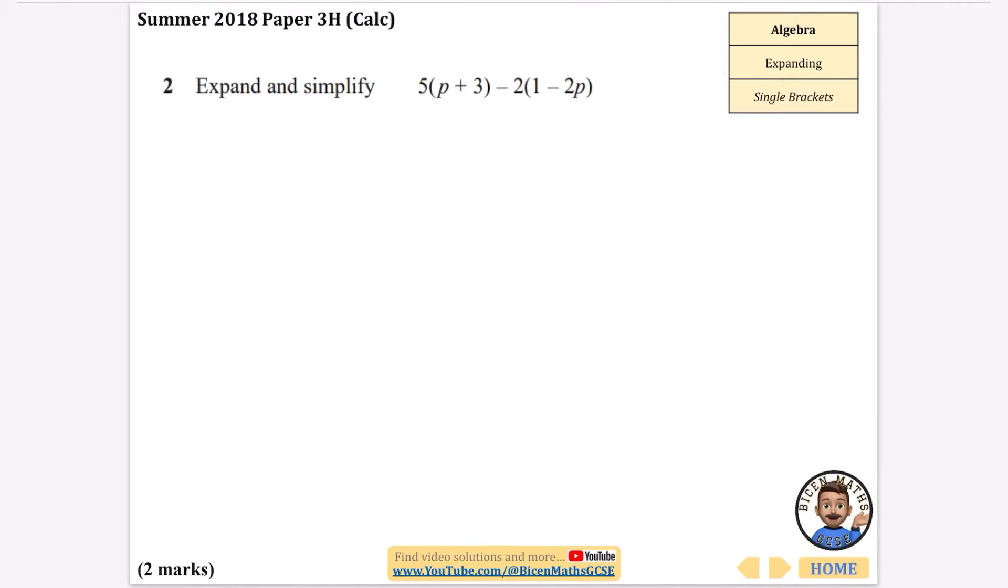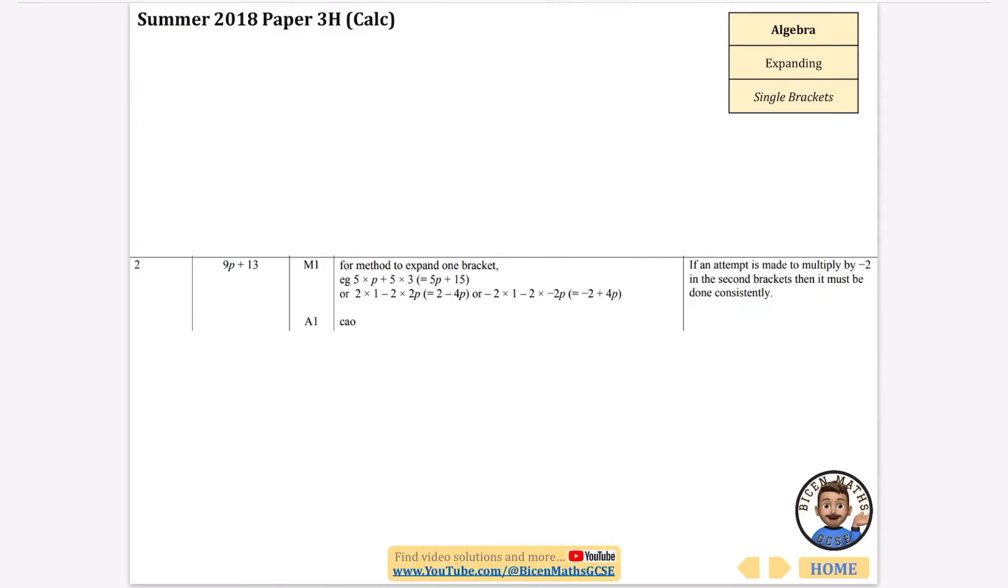So this is the only question that there is on expanding single brackets. I'm just going to expand the first one, which is going to be 5p plus 15. Now the only mistake that people make here is there is a negative so it's going to be expanding it by multiplying by negative 2. So negative 2 times 1 is negative 2 and then negative 2 times negative 2p which gets you positive 4p. Now all you need to do is just collect together the terms. So 5p plus 4p is 9p and 15 minus 2 is 13. So our answer is 9p plus 13.